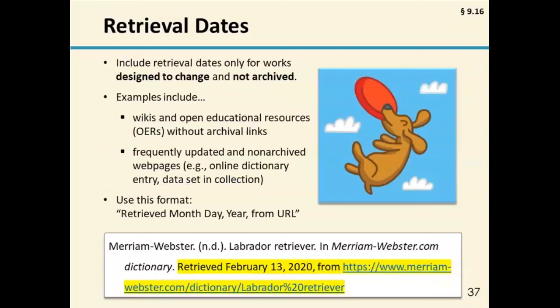In the seventh edition, there are now only select cases in which reference entries need to include a retrieval date in the source element. These are cases when the work is designed to change over time as information changes or new information is added, and when the page you are looking at is not archived. Note that when a stable or archived version of the work is available, you can include the URL to that in your reference entry and not a retrieval date. However, both of these conditions rarely apply, so the majority of references do not need retrieval dates. Types of references that might include them are often things like wikis, open educational resources, frequently updated web pages whose versions are not archived, and databases still in collection intended to change over time.